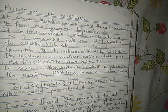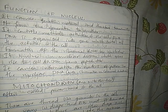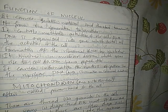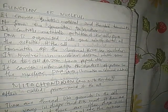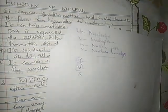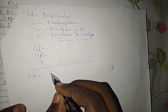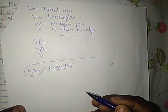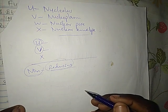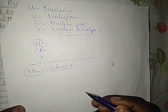Question 2 asks about the procedure for testing non-reducing sugar in a given solution. This is seen as a practical question but it is a theory question. In testing non-reducing sugar, you should know that being non-reducing means it has some bonds, and the presence of those bonds inhibits the release of electrons by the sugar, causing it to be non-reducing. Some of the last stages become similar to those when testing reducing sugar.